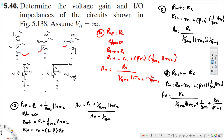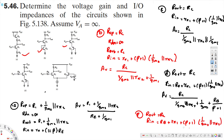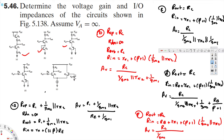For part E, the output impedance is Rc, and the input impedance is Rb plus R51 plus (beta + 1) times (1/gm2 parallel R52). The voltage gain equals Rc divided by [(1/gm2 parallel R52) parallel (1/gm1) parallel (Rb divided by (beta + 1))].